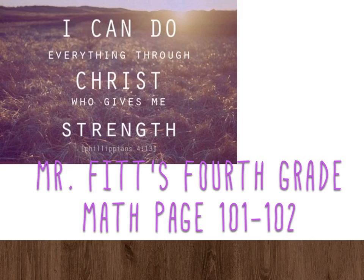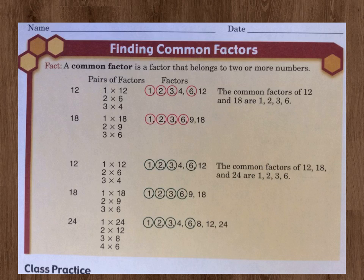We're going to first start by looking at the yellow box at the top of the page. A common factor is a factor that belongs to two or more numbers. And they show us some examples of that right here. Here's the numbers 12 and 18 being used for the first part. For 12, the pairs of factors are 1 times 12, 2 times 6, 3 times 4. And all of those are then put in a line right here in numerical order: 1, 2, 3, 4, 6, and 12.